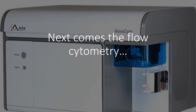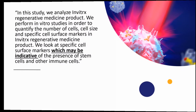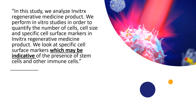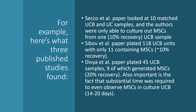Next comes the flow cytometry. If you really want to confuse a doctor, throw flow cytometry at them and see what happens. What you read in the white paper is the fine print, and what does the fine print say? It says results 'may be indicative of the presence of stem cells and other immune cells.' The 'maybe' part is what to pay attention to. In cord blood, we wouldn't really expect to find any viable or many viable mesenchymal stem cells, which is what's trying to be identified here.